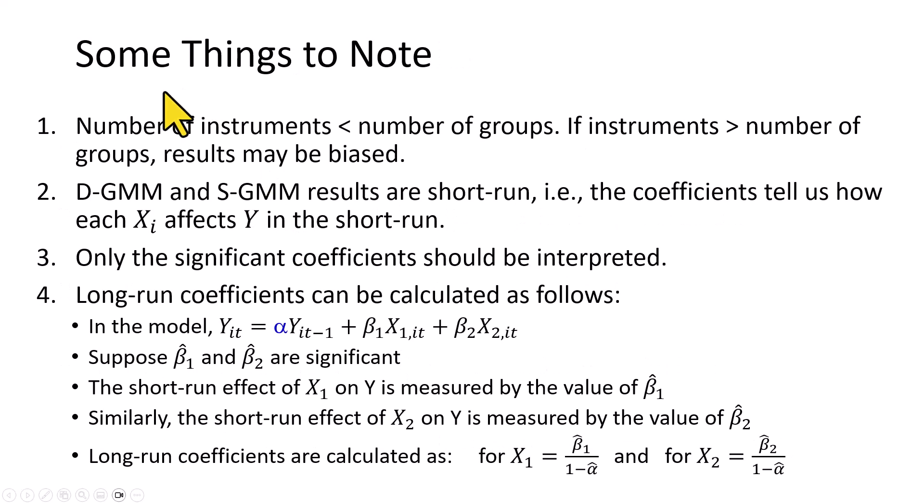Some things to note. Number one, remember, the number of instruments has to be less than the number of individuals, because if that's not the case, your results may be biased. Number two, these two estimators, difference GMM and system GMM, the results are actually short-run, so that the coefficients tell us how each regressor affects Y in the short run. Thirdly, only the significant coefficients should be interpreted, as is the case with every regression analysis.